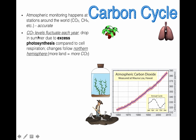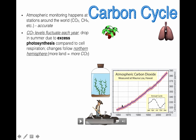The carbon dioxide levels actually fluctuate each year. This little red line shows how the carbon dioxide levels are going up and down. This is due to changes in the seasons. During the summertime, especially because most of our land is in the northern hemisphere, there's going to be a lot more photosynthesis going on. The extra light causes a lot more carbon dioxide to be taken in by plants, so we should expect to see some dips during that time.